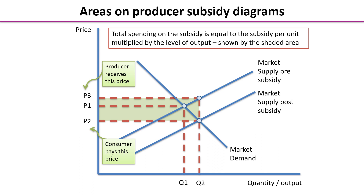What we're interested in on this diagram is having a look at the total spending on the subsidy. We remember that the subsidy per unit is the vertical distance between the two lines, which is equivalent to the distance P2 to P3. That's the subsidy per unit. The new market equilibrium is Q2, so the subsidy per unit times the number of units actually sold, Q2, gives us the green shaded area — that is the total spending on the subsidy by the government.